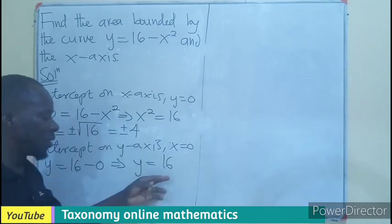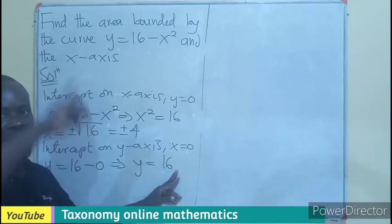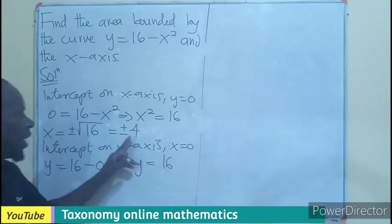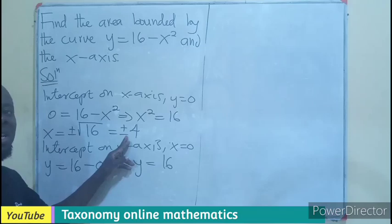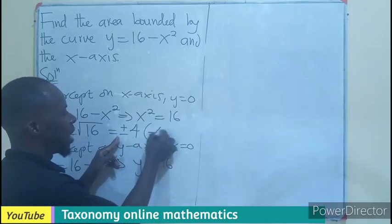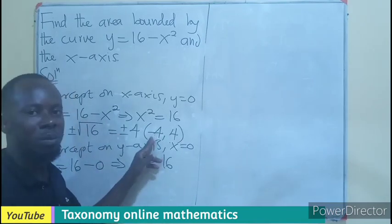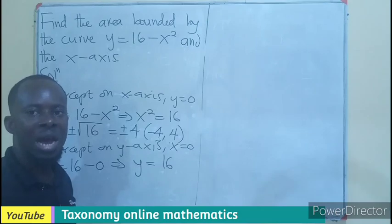Now this point is going to be the turning point of the graph. These right here are going to be the lower limit and the upper limit. This is minus 4 and positive 4. So the lower limit will be minus 4, then 4 will be the upper limit.